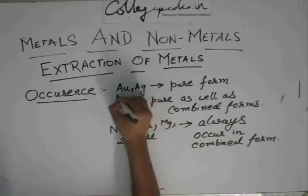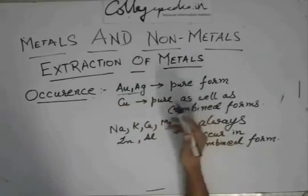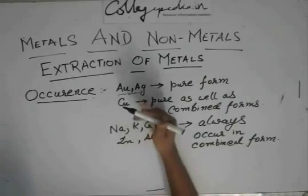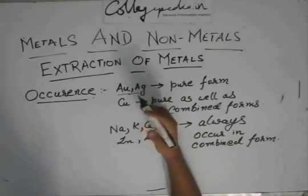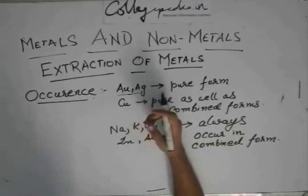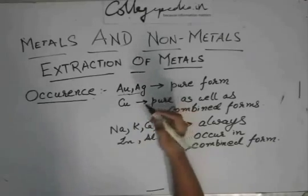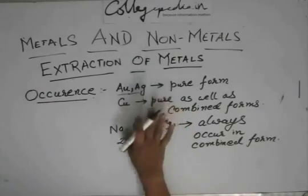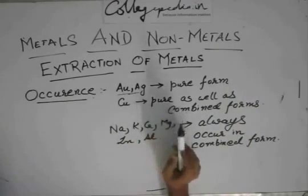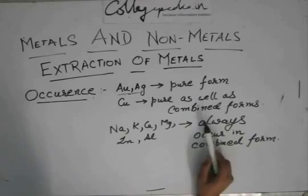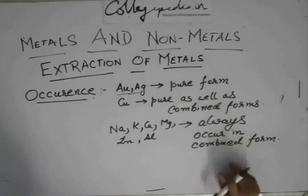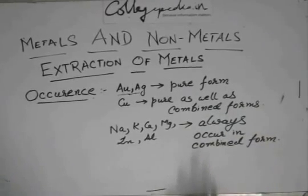Gold and silver, on the other hand, are very unreactive — they are towards the bottom of the reactivity series. They generally don't react with chlorine or oxygen present in the air, water, or anything else. So gold and silver occur only in pure form. Copper occurs in pure as well as combined forms, and sodium, potassium, calcium, magnesium, and all these other reactive metals always occur in combined forms.